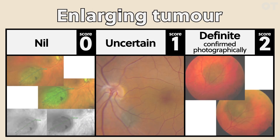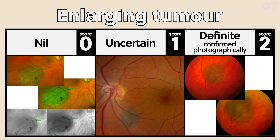For enlargement: if there's no photographic evidence of enlargement, you give it a score of zero. If you're unsure, you give it a score of one. Just because you have no old photographs does not mean you have to give the nevus a score of one — we would not want all nevi that have never been photographed before to be referred into hospital. If the nevus scores zero on all other categories, it is very safe to watch it in the community, getting repeat photos in six to eight months. If there's definite enlargement on photography, you give it a score of two.